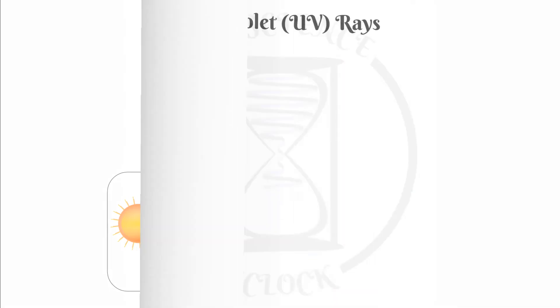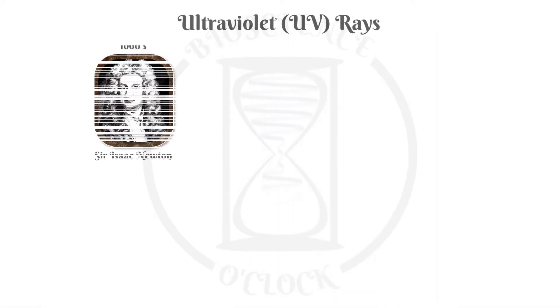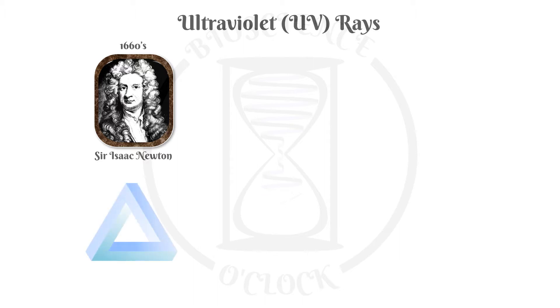All the way back in the 1660s, Sir Isaac Newton discovered the visible light spectrum by using a prism to decompose the sunlight into the colors of the rainbow.